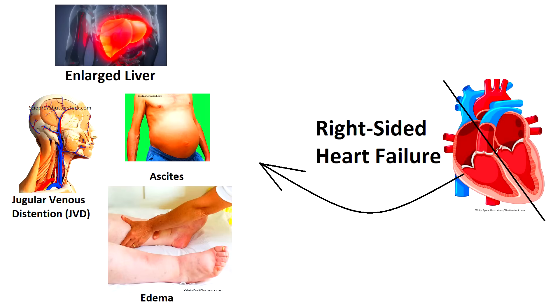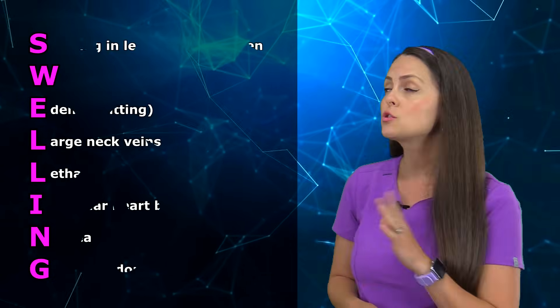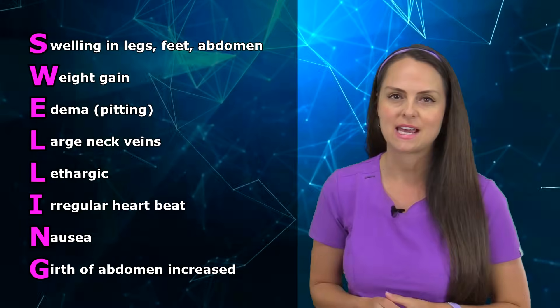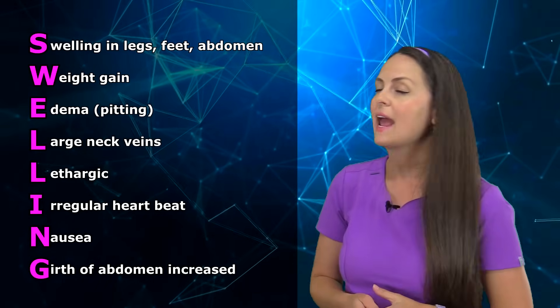So whenever you're trying to think of those signs and symptoms of a patient with right sided heart failure, remember that right sided heart failure presents with swelling and peripheral signs and symptoms. And to help you remember those signs and symptoms, let's remember the word SWELLING. So S is for swelling in the legs, the feet and abdomen, which again is known as ascites. W is for weight gain.